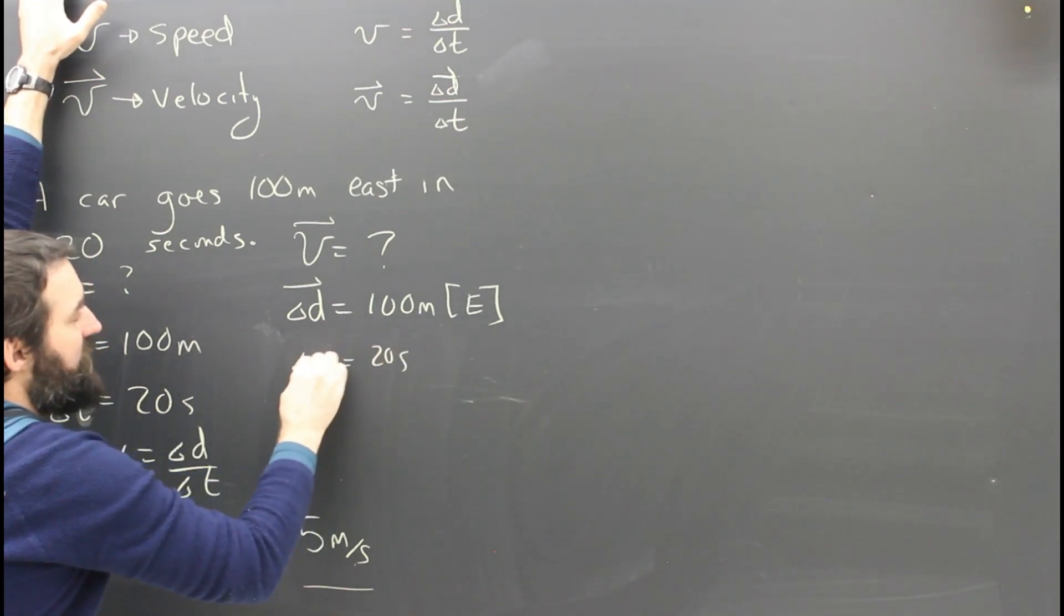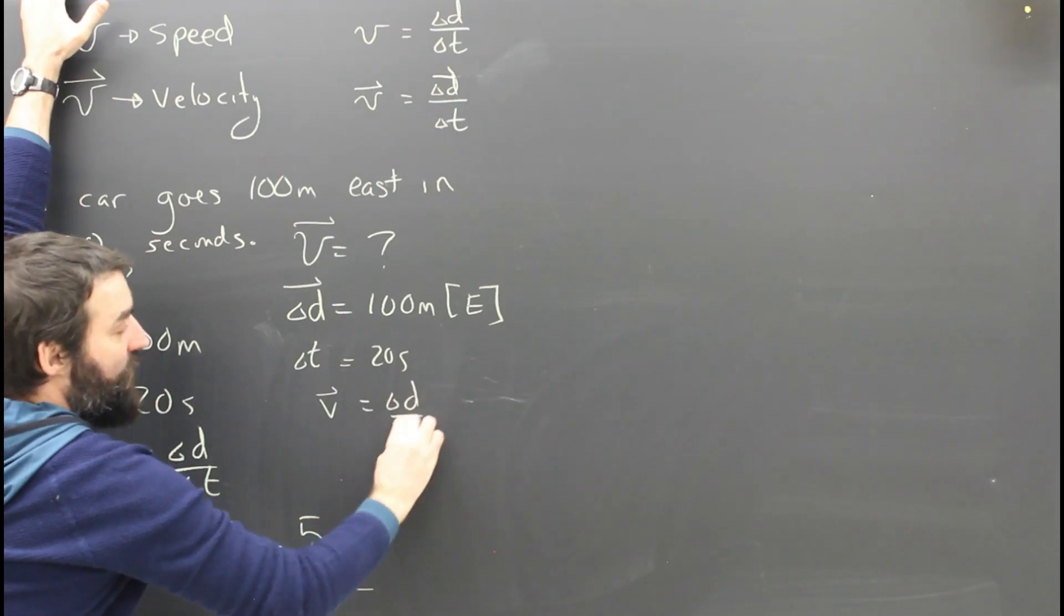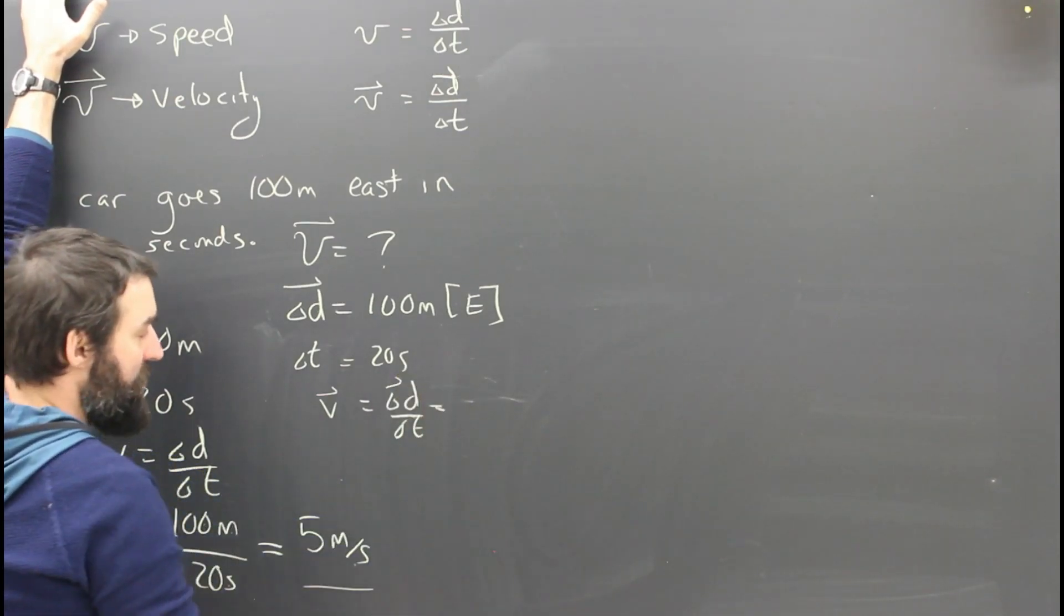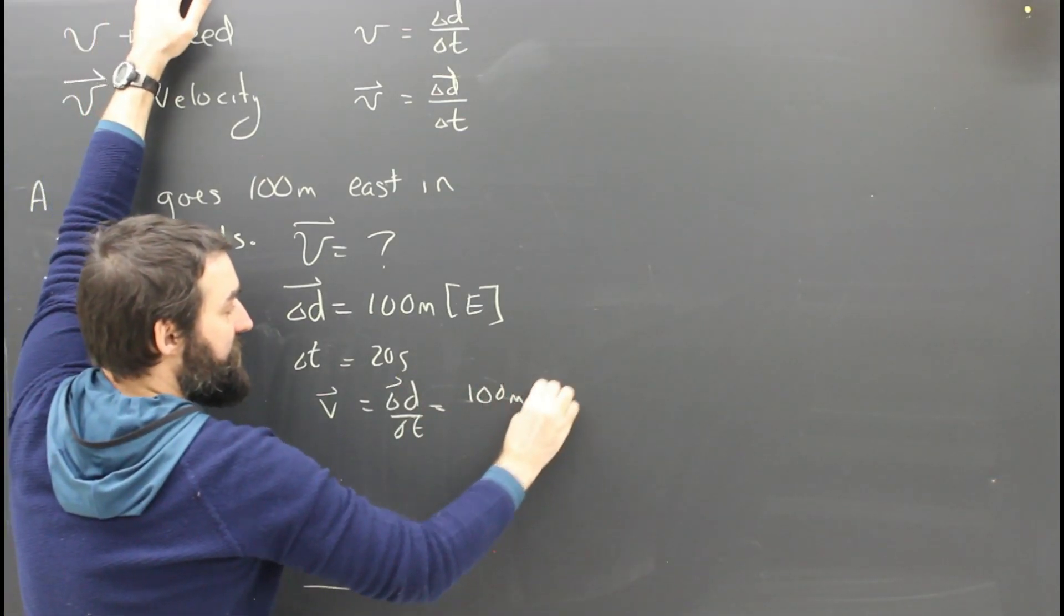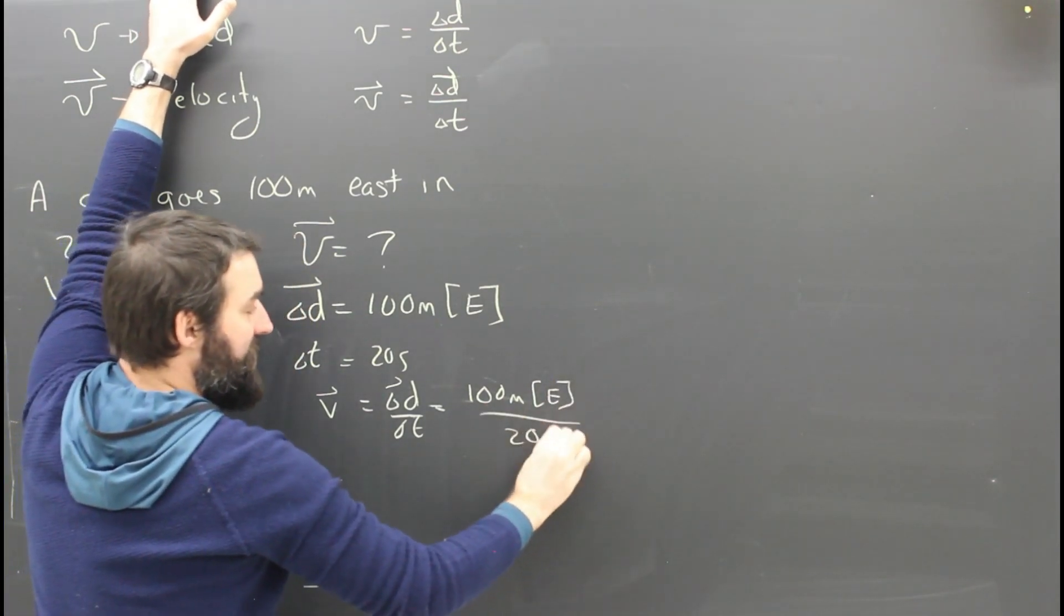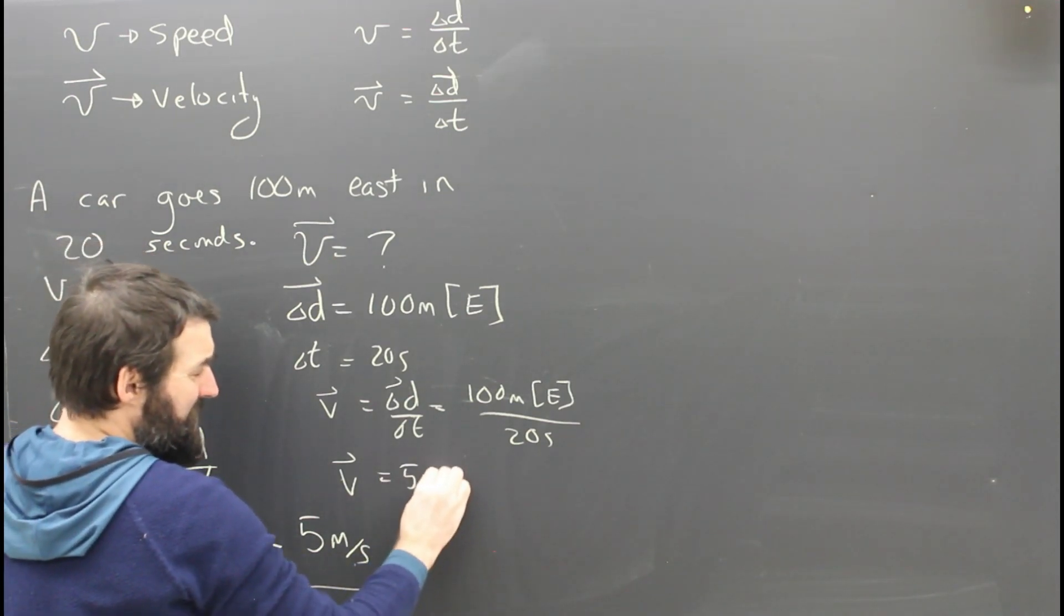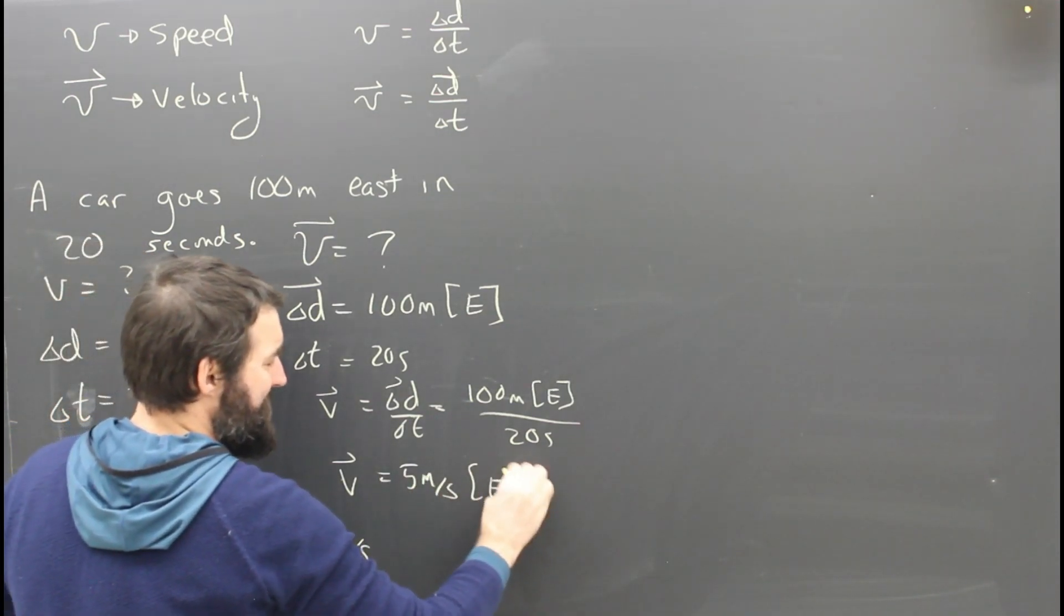The time is, of course, still 20 seconds. The velocity is displacement over the time, which is 100 meters east. Put everything in there, the units and the direction, divided by 20 seconds. So the velocity is, in this case, going to be 5 meters per second east.